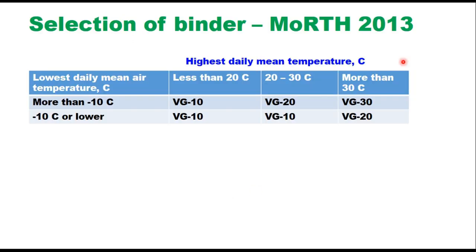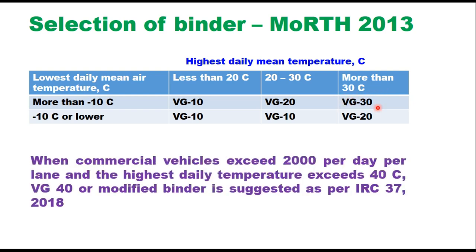Ministry of Road, Transport and Highways 5th revision of 2013 gives guidelines for selection of binder grade based on lowest mean air temperature and highest daily mean temperature. When it is more than minus 10 and less than 20 degrees centigrade, this is a cold region and VG 10 should be selected. When the highest daily mean temperature is more than 30 degrees centigrade, VG 30 is recommended. IRC 37 suggests that when commercial vehicles are more than 2000 per day per lane and the highest daily temperature exceeds 40 degrees centigrade, then VG 40 or modified binder should be used.